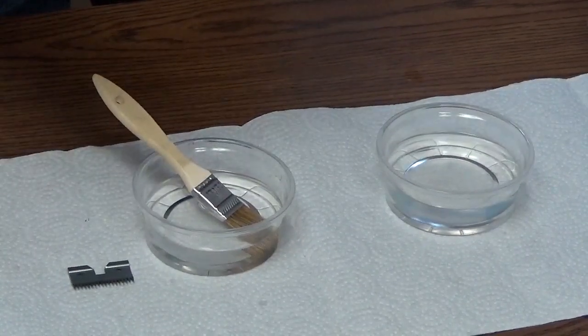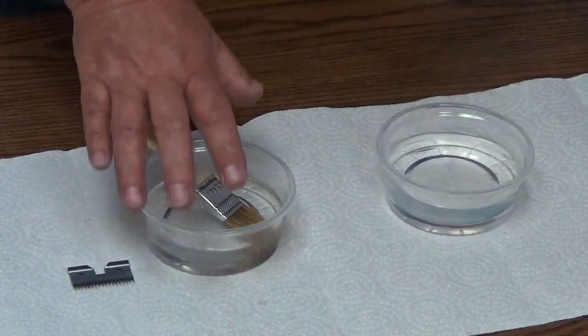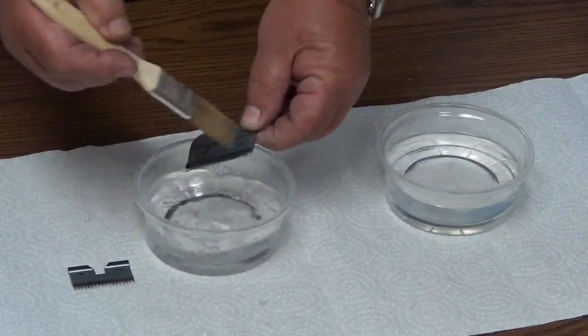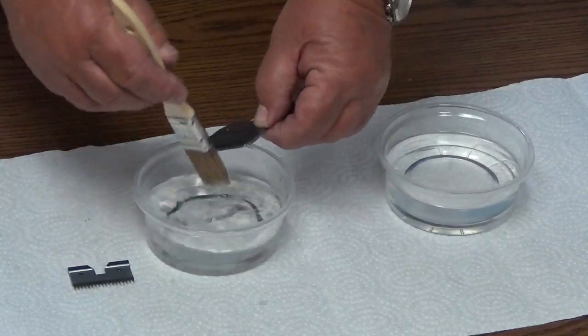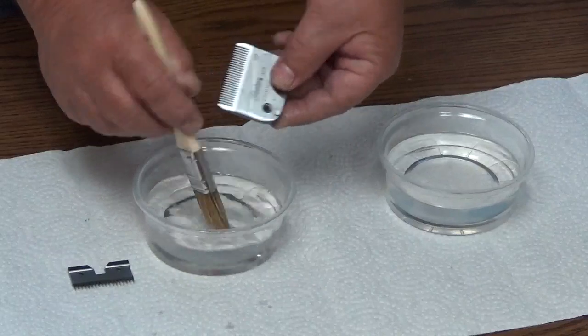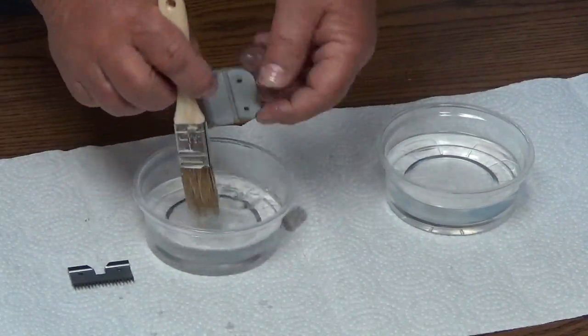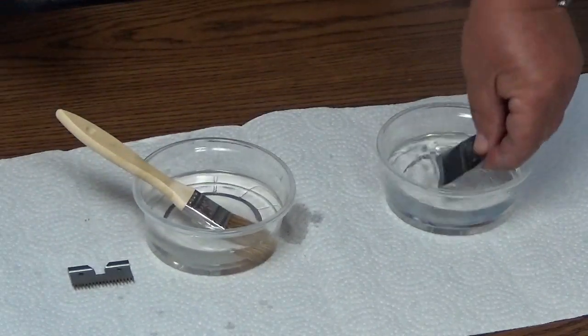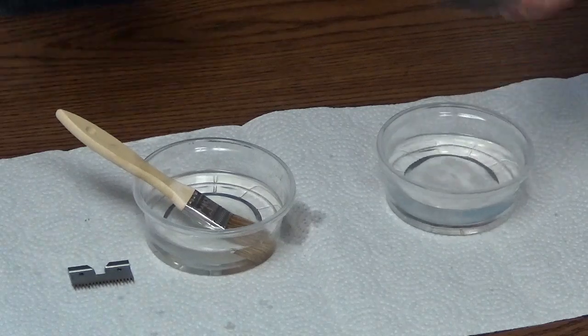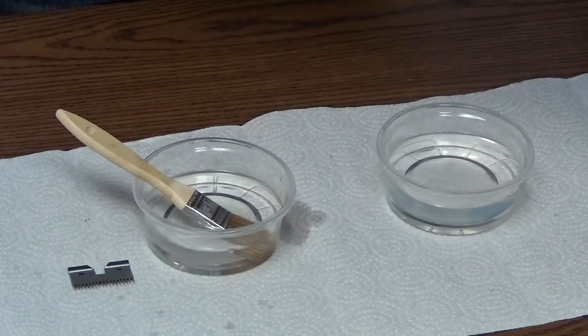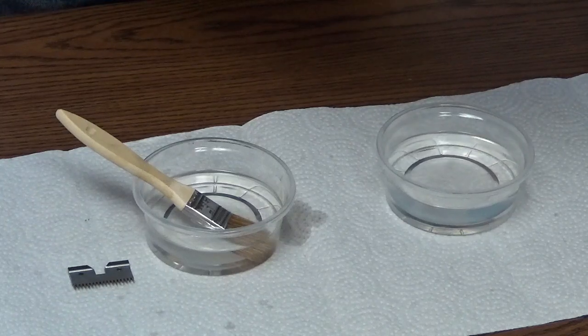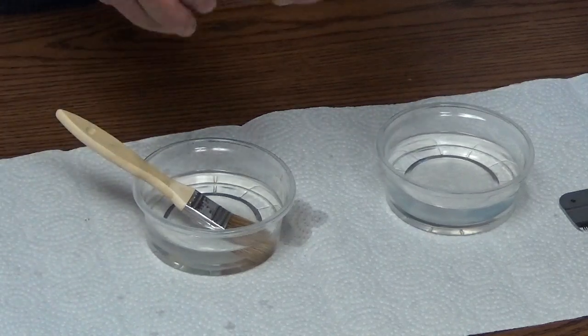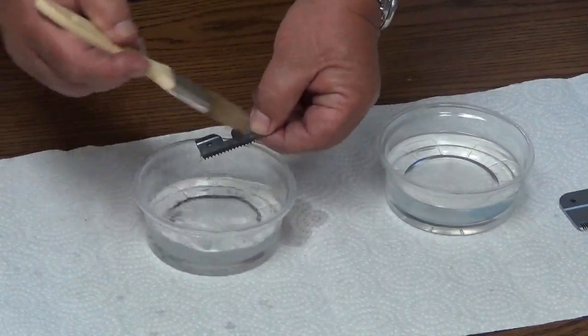Now we must wash our blade before we can reassemble it. I have two small containers with kerosene in them. We're just going to wash the blade clean to remove any residue from the honing powder. Then we're going to dip it again in the second one as a rinse. We'll dry it off. Do not use soap and water because that will corrode the blade. You must use some type of petroleum type product to prevent corrosion. We'll repeat the process on the cutter.